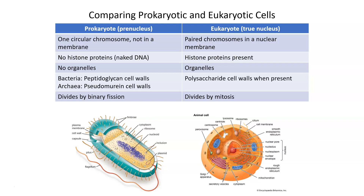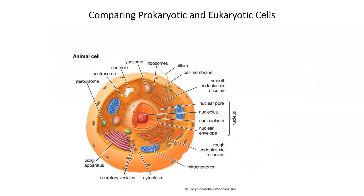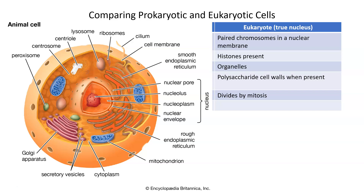We're going to start with a simple table that outlines some basic similarities and differences between prokaryotes and eukaryotes, and we're going to dive into these cells in more depth in later videos. When we compare at the surface level, we have to start with the nuclear region and the nucleus, because that's really what differentiates these cells from each other. The prefix 'eu' means true, and 'karyote' means kernel in Greek, so eukaryote loosely translates to 'true nucleus.'